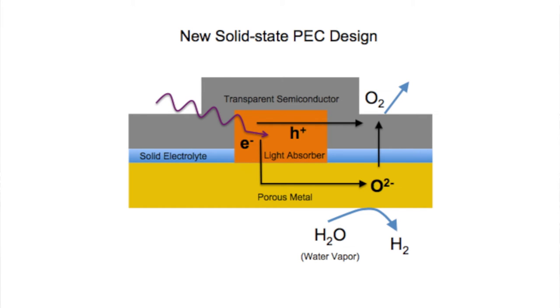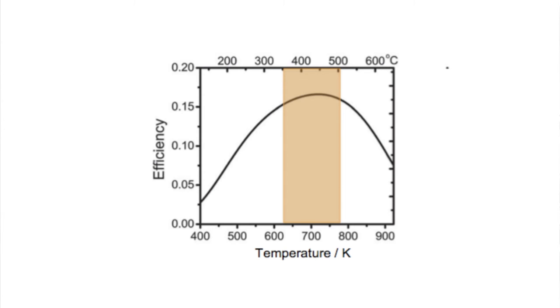Cool. So how high can this efficiency get for these devices? Well, my colleagues have done some simulations on this device design. And as you can see here, they found that you can reach 15% solar to hydrogen efficiency if you operate between 350 to 500 degrees Celsius.